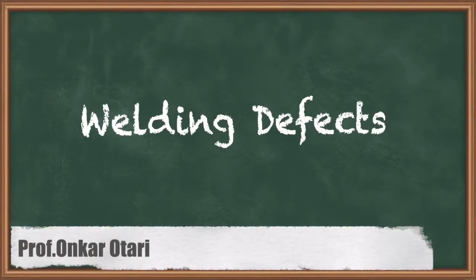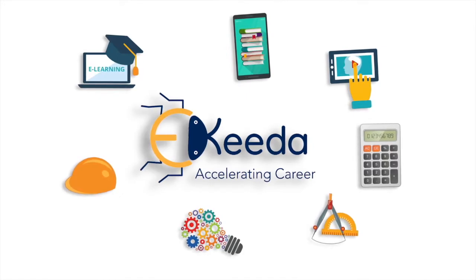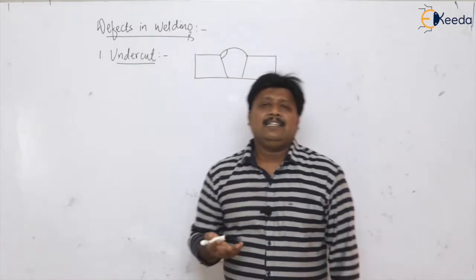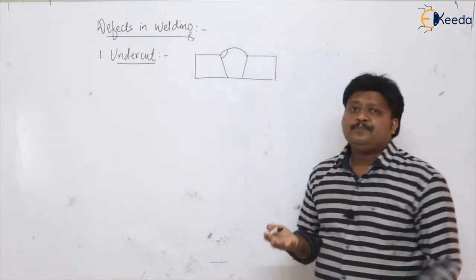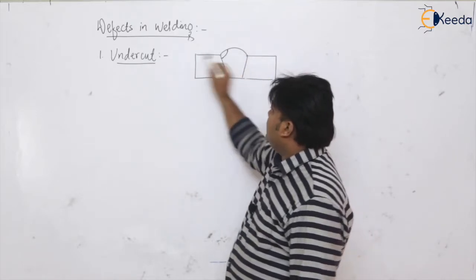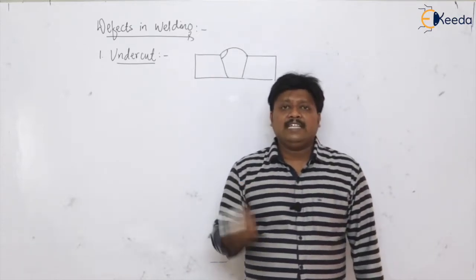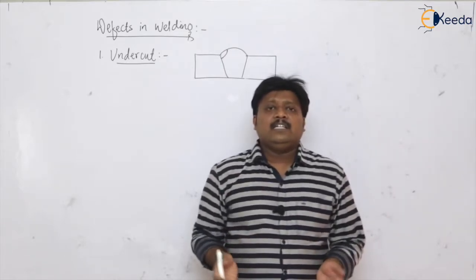Welcome students. In this video we are going to learn about the various kinds of defects which occur in the welding process. Let us start with the very first defect, that is the undercut. The undercut appears like a small notch in the weld interface — you can see this small notch in the weld interface, which is nothing but the undercut.